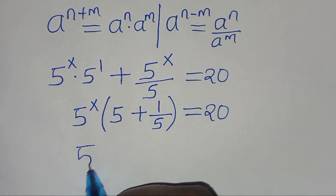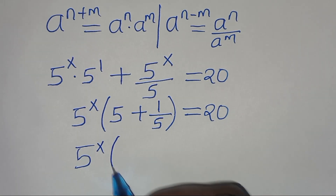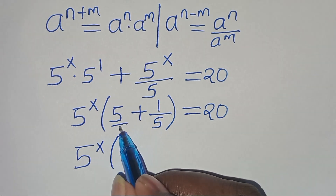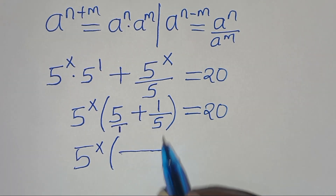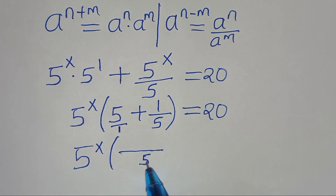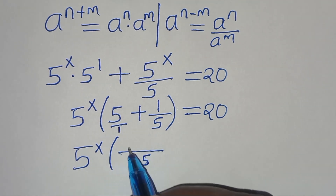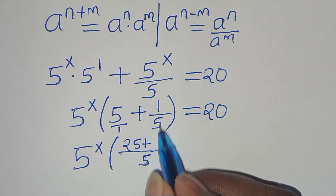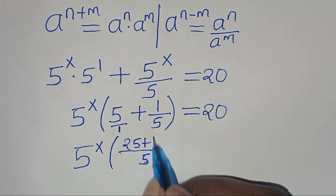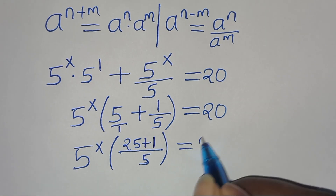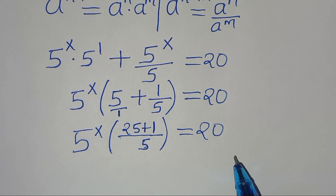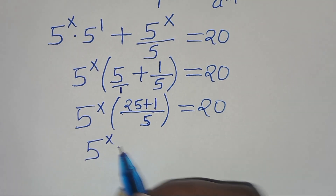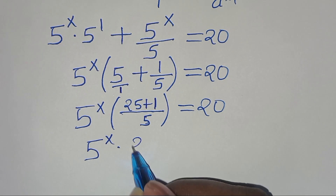The next step: inside the parentheses, 5 is over 1, so the LCD is 5. We get 5 times 5 which is 25, then plus 1 times 1 which is 1, all over 5. This gives us 5 to the power of x multiplied by 25 plus 1, which is 26, over 5, equals 20.